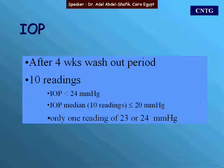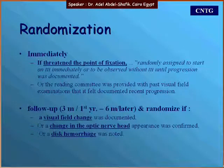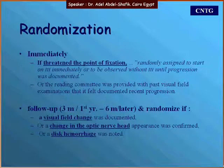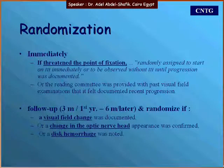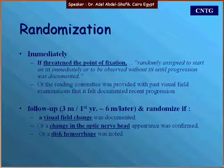Randomization could be immediate if there was a threat to the point of fixation. Otherwise, patients were followed up every three months in the first year, and every six months thereafter. Randomization only occurred if there were visual field changes, disc changes, or disc hemorrhage. Patients were then randomized into one of two arms: the no-treatment arm or the treatment arm.